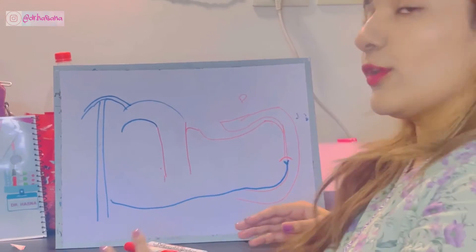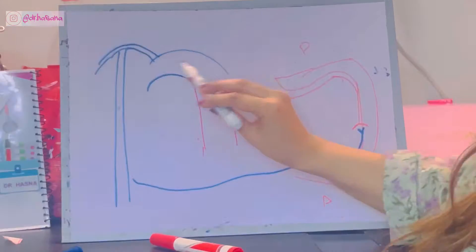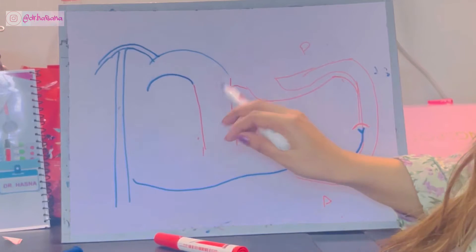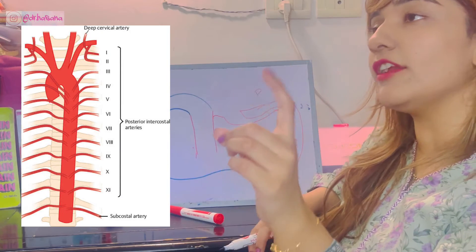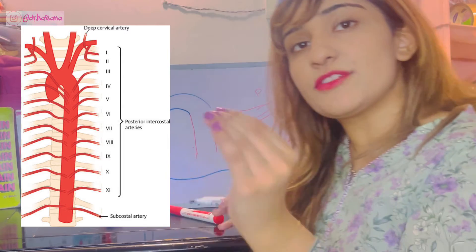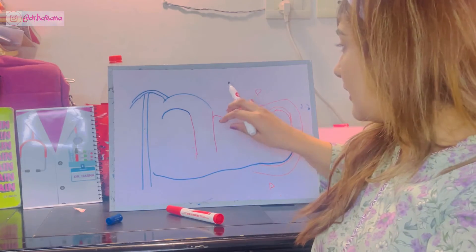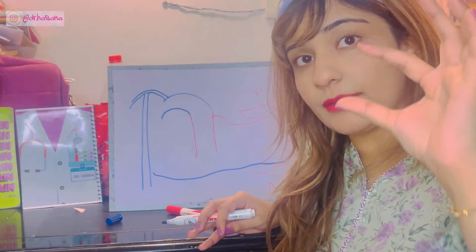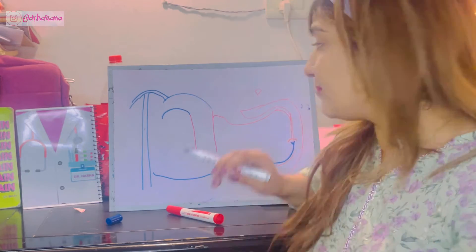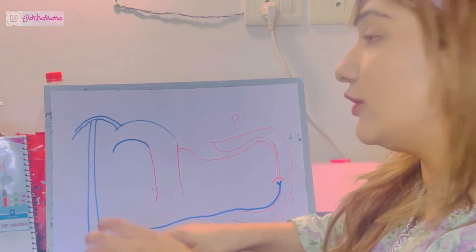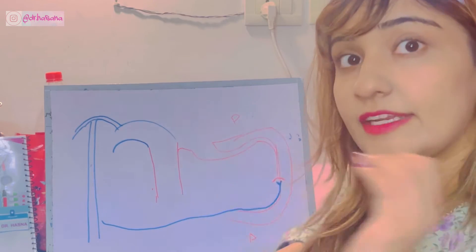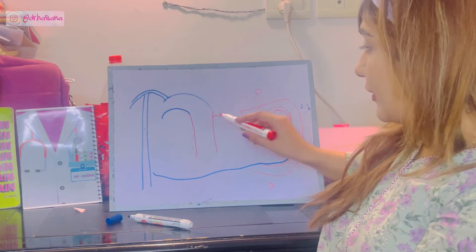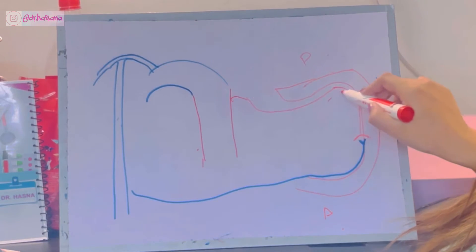Now focus on the aorta. We know there is the arch of the aorta, and then the descending thoracic aorta. The descending thoracic aorta is responsible for giving the posterior intercostal arteries, which run in the posterior part of the ribs. Intercostal arteries run between each rib in the intercostal space, specifically along the lower border of the ribs.